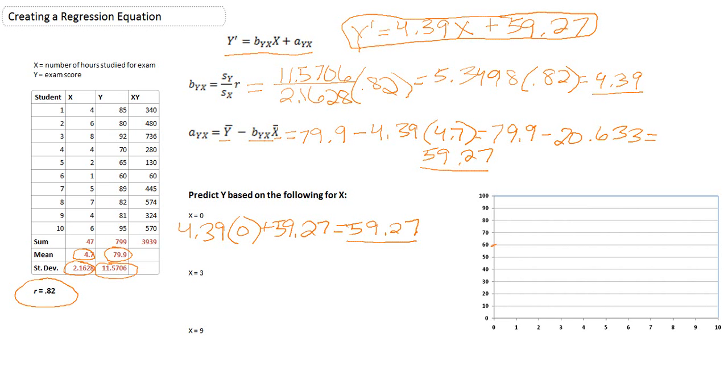Now, let's go through calculating two other values for x. Again, we have 4.39 multiplied by x. In this case, let's say, we have a student who studied 3 hours plus 59.27. 4.39 times 3 ends up being 13.17. And we add that to 59.27 to get 72.44. Based on this equation, we would expect a student who studied 3 hours for the exam to get a 72.44.